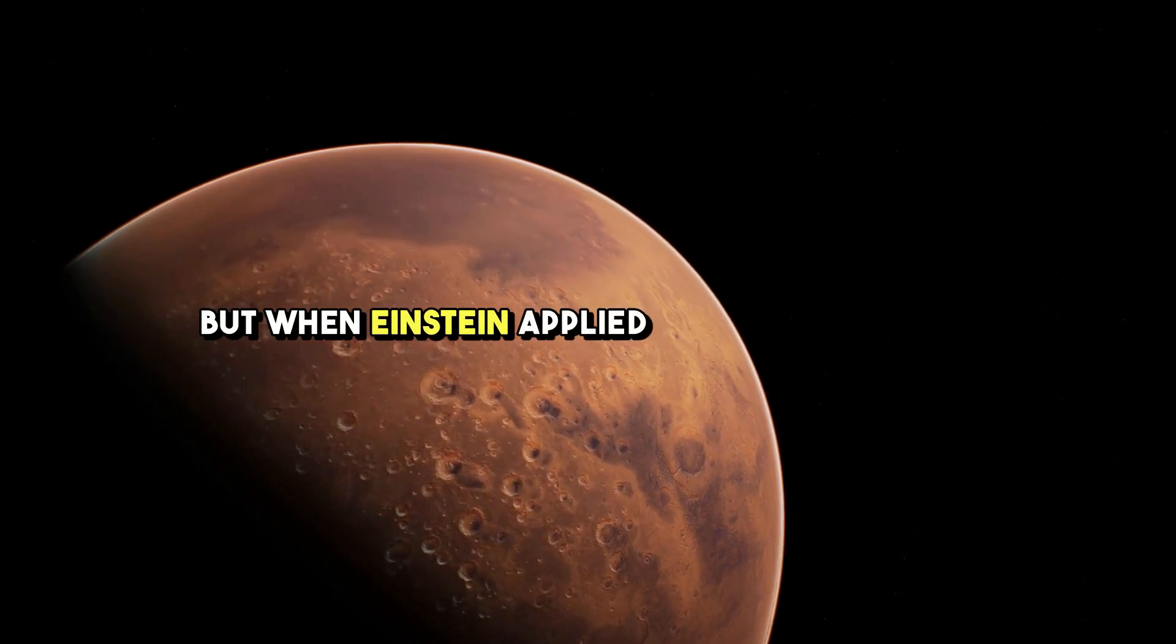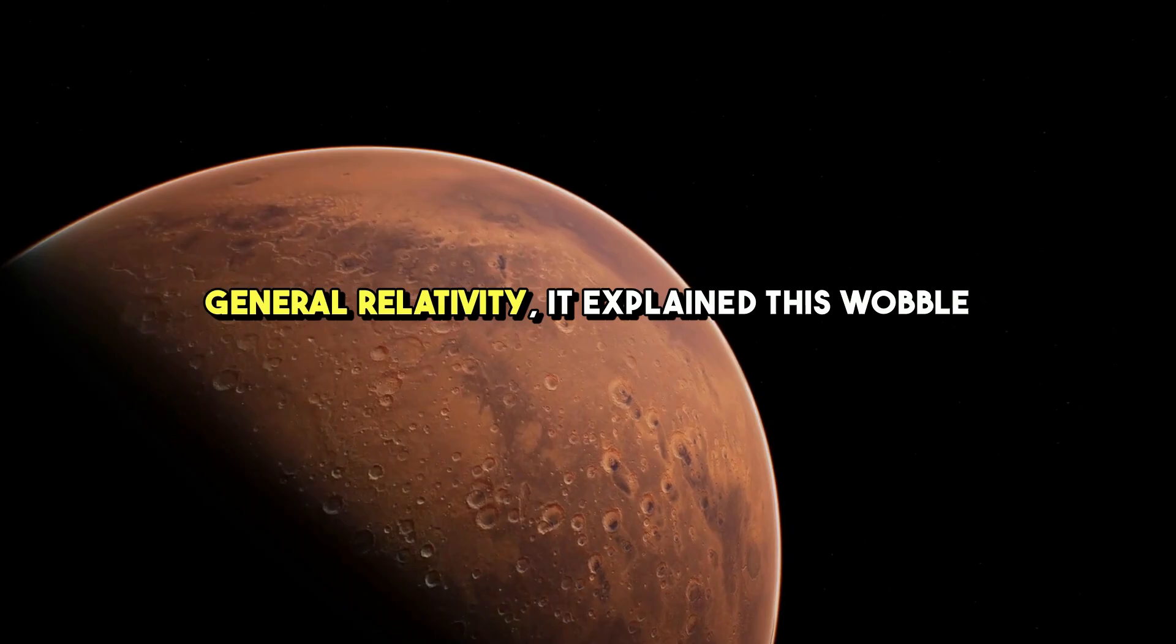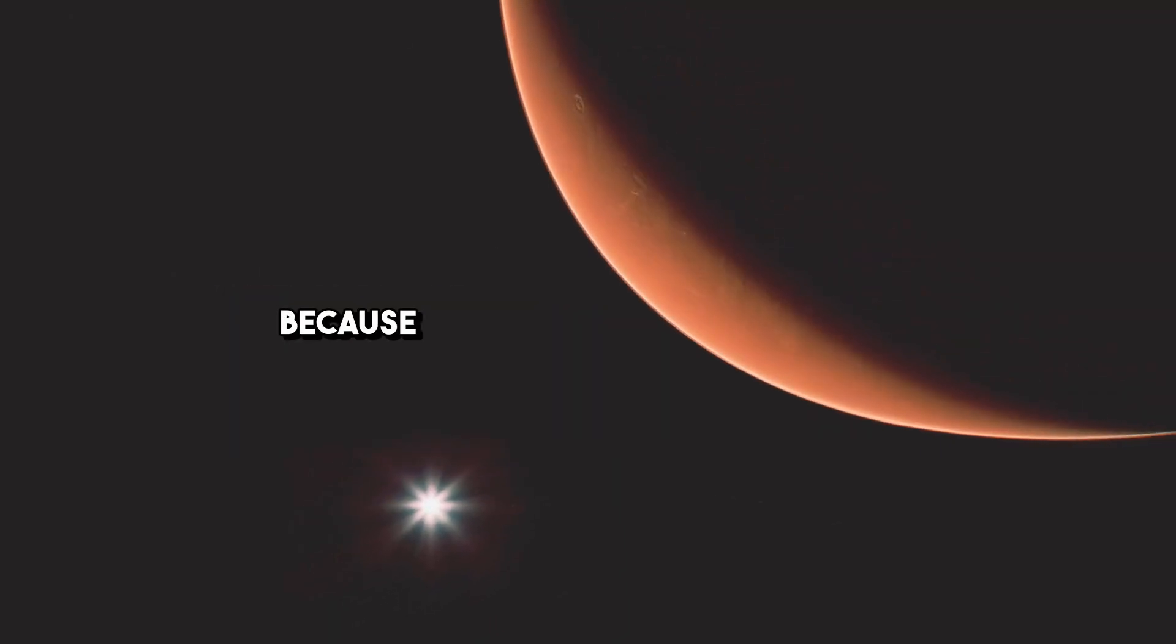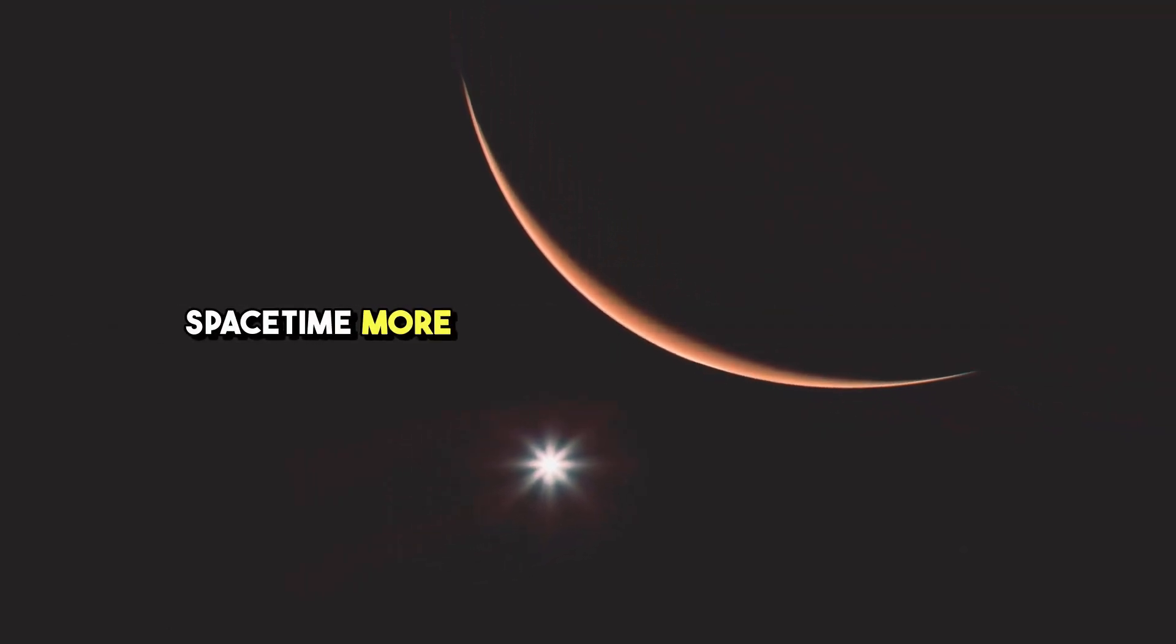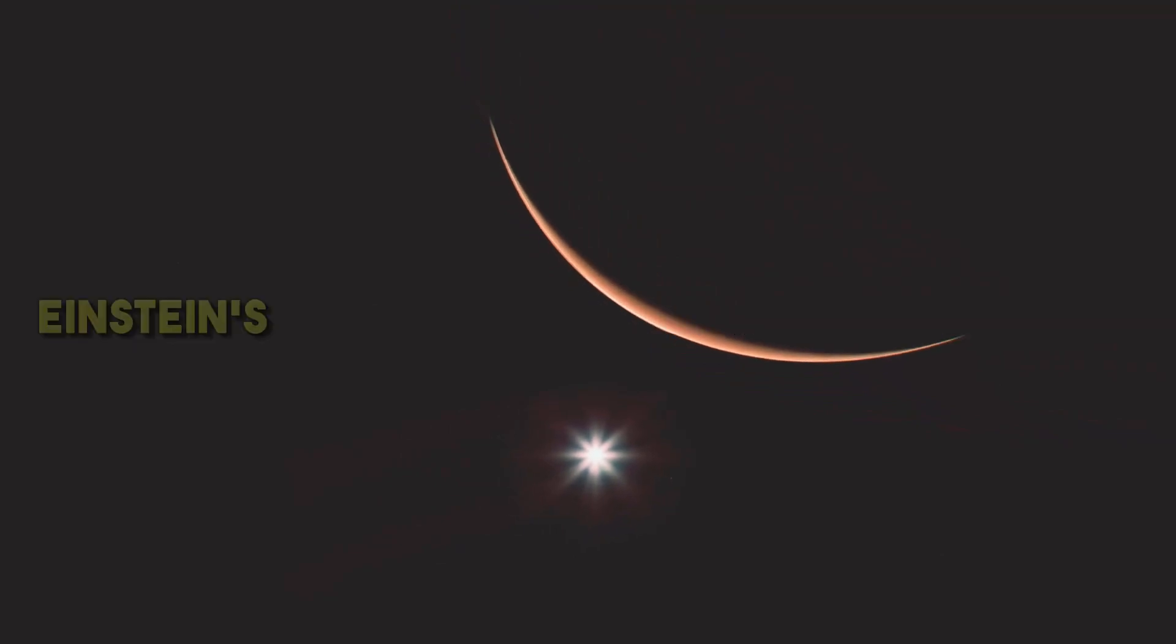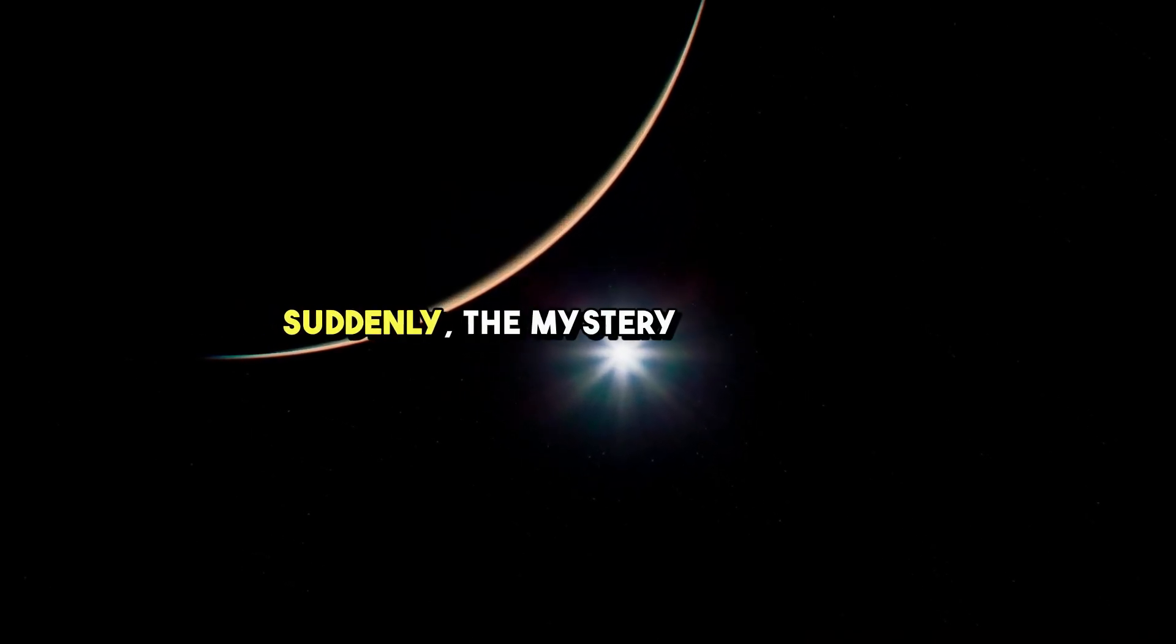But when Einstein applied his new theory of general relativity, it explained this wobble perfectly. Why? Because Mercury is so close to the Sun that it feels the warping of space-time more strongly than other planets. Einstein's equations accounted for that, and suddenly, the mystery was solved.